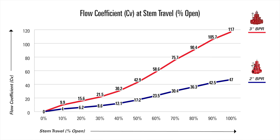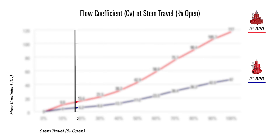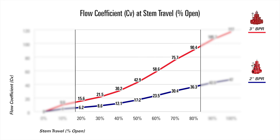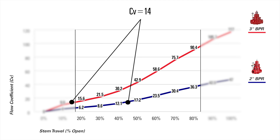We recommend you select a valve for which the CV falls between 20 and 80% open stem travel. For example, if you used our valve sizing calculator and came up with a CV value of 14, you would want to choose the 2-inch valve, because in the 3-inch valve, 14 would fall outside of the recommended range.